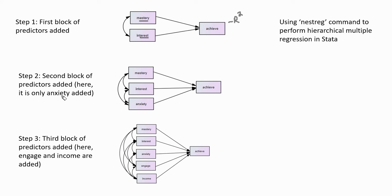At step two, I'm adding in another block of predictors — in this case, only one, which is anxiety. That variable is being added to the model, and so the R-square value is going to let us know about the proportion of variation accounted for in achievement, not only as a function of mastery goals and interest, but now also through the addition of the anxiety variable.